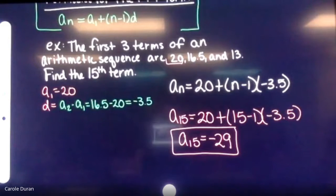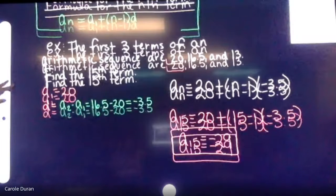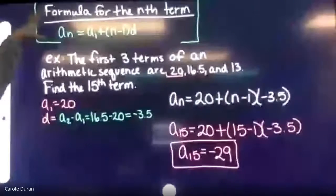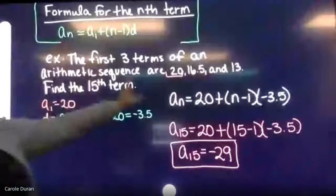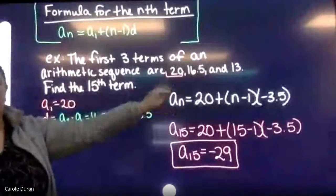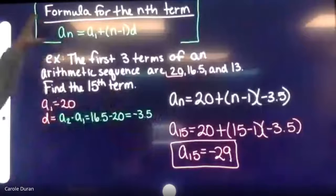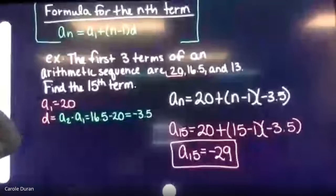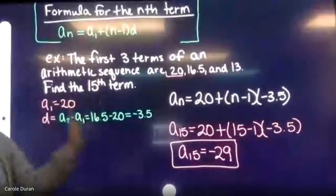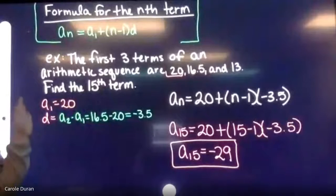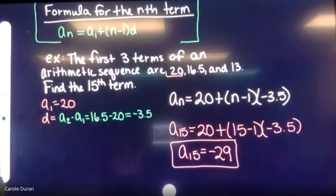Are there any questions about how I used this formula to write the explicit rule and evaluate at a specific term? No concerns? Okay, let's do another example.